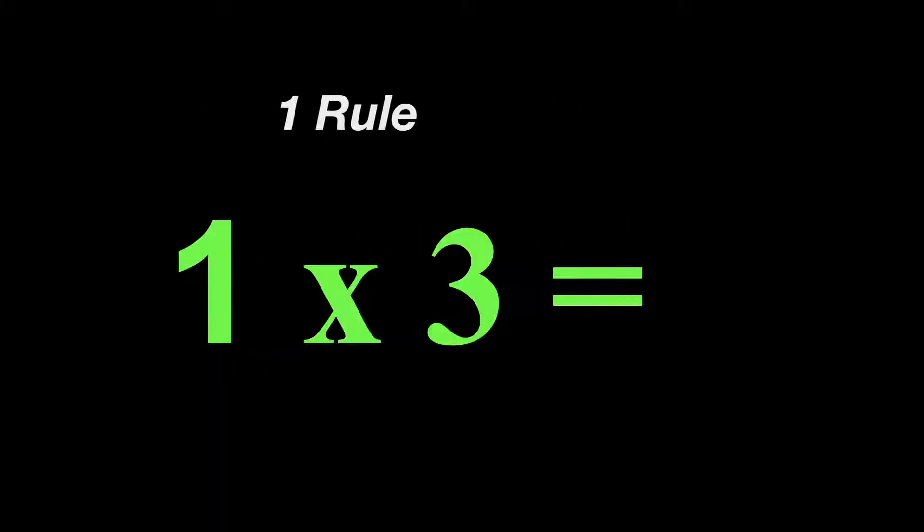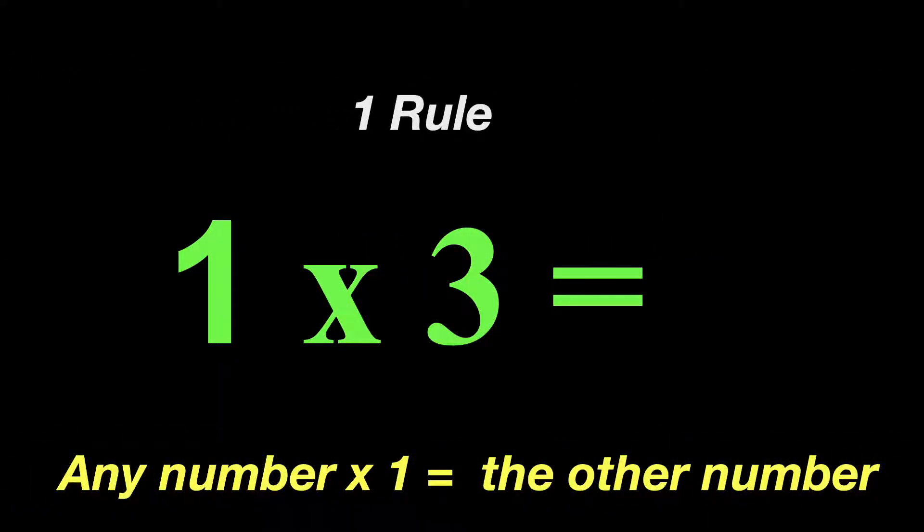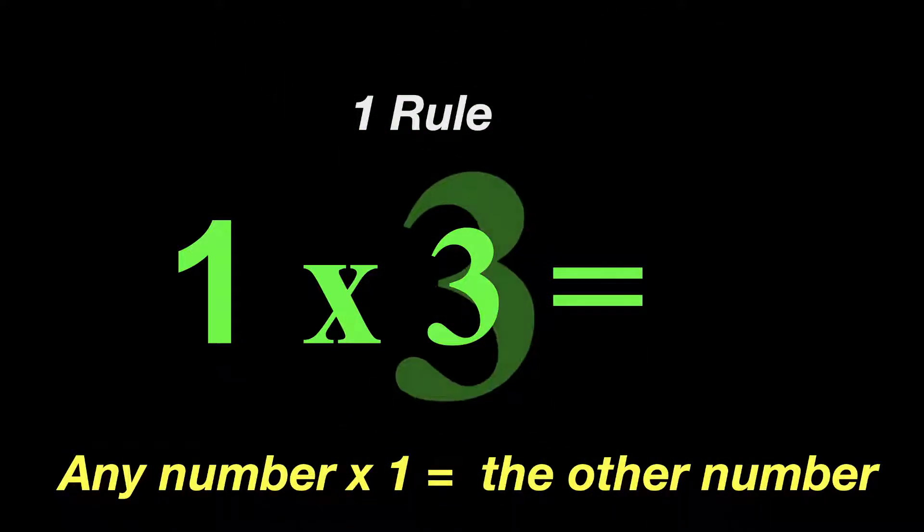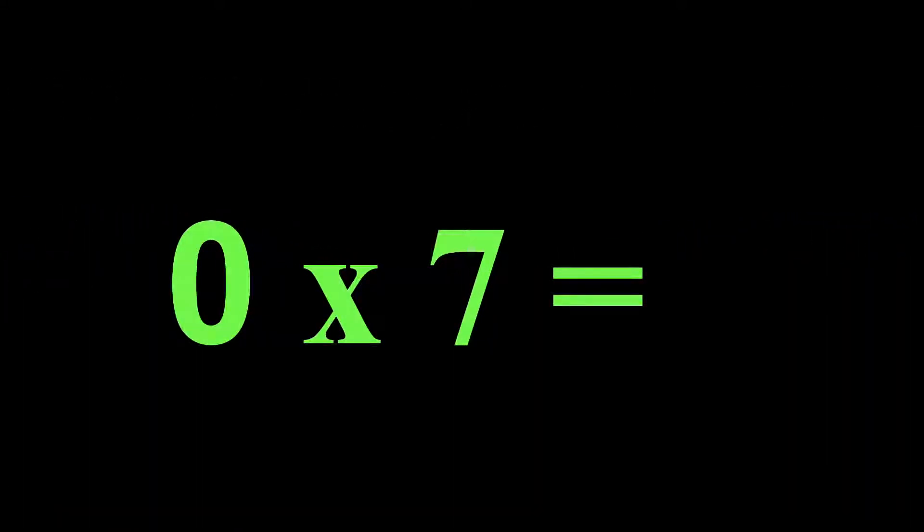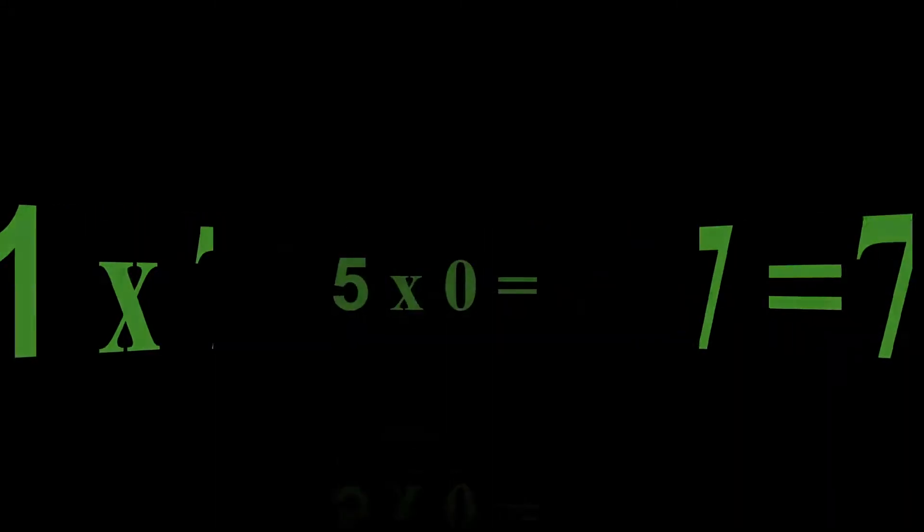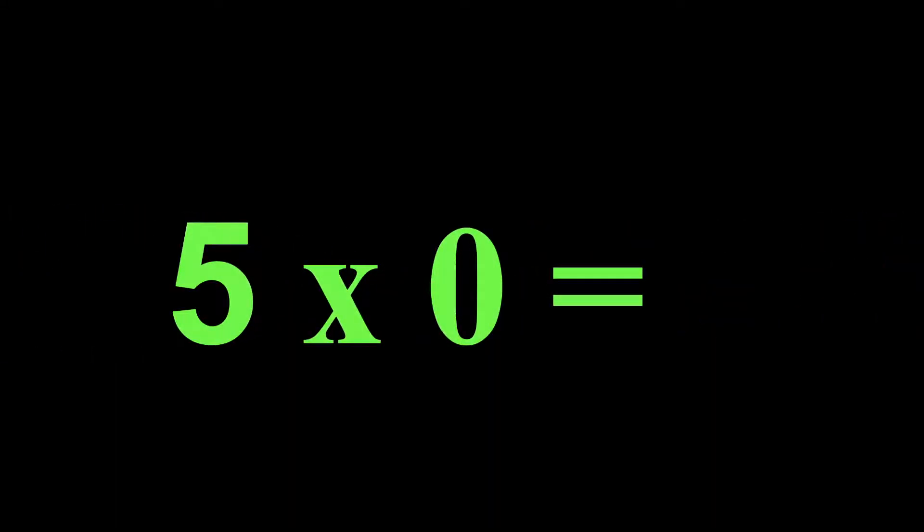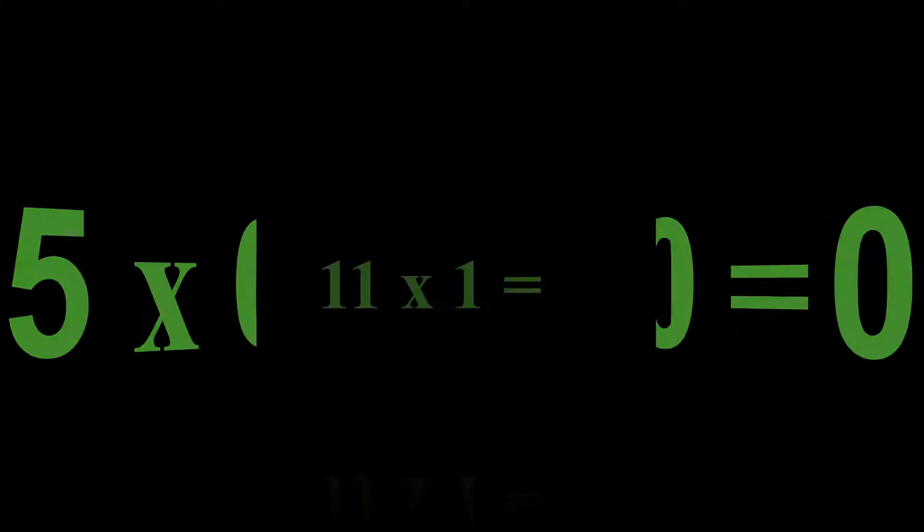One times three is just the one rule. Any number times one, it's just the other number. So one times three is three. Zero times seven, seeing that zero. One times seven is going to be our one rule. So it's going to be one times seven is seven. Five times zero is going to equal zero because of the zero rule.